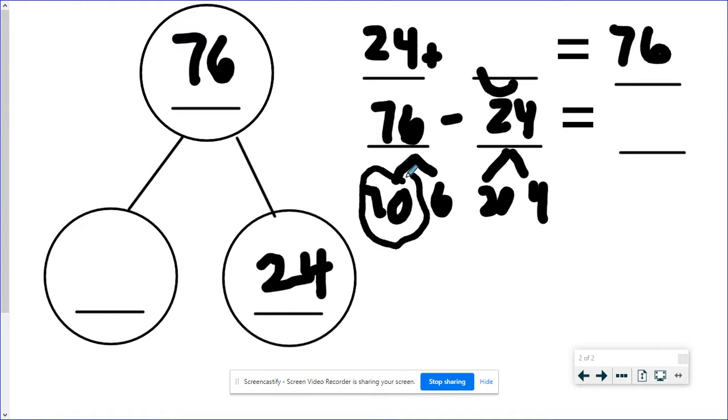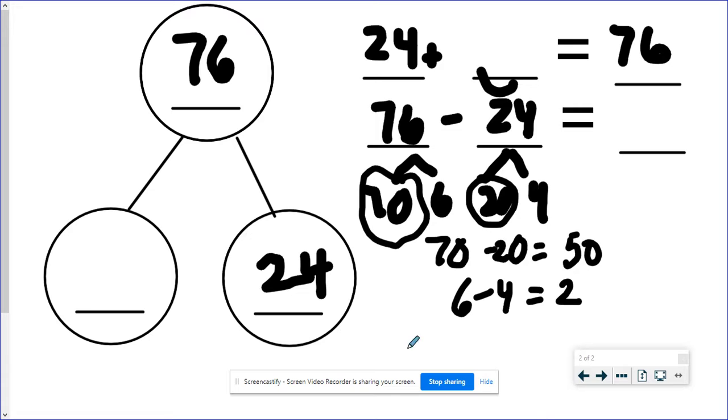All right, so I'm going to circle my tens, 70 and 20. I am subtracting. So I'm going to write 70 subtract 20. If I can do 7 subtract 2, I can do 70 subtract 20. 7 tens take away 2 tens is 5 tens, which is 50. Now I'm going to subtract my ones. 6 subtract 4 equals 2. I took the tens and the ones apart. Now I have to put them back together. 50 and 2. Speaker code cards. Very easy. Equals 52.